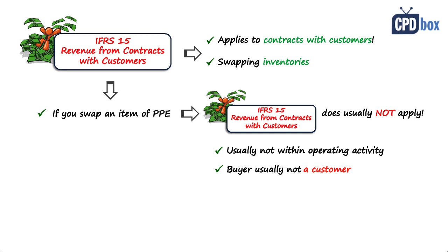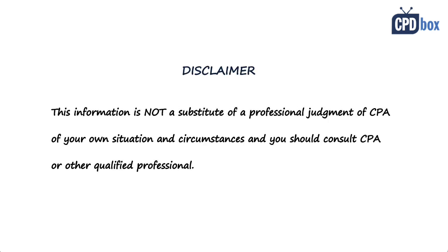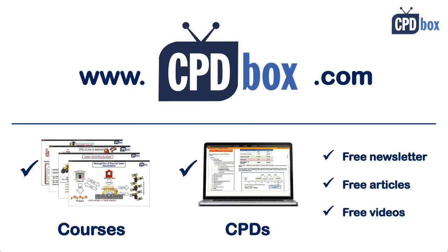Instead, you should look at IAS 16 — Property, Plant and Equipment — and more specifically at exchanges of assets. Here you would recognize the asset acquired at fair value, de-recognize the asset given up, and recognize a gain or loss on disposal. And that's it. Please read our disclaimer because this video does not replace professional advice.